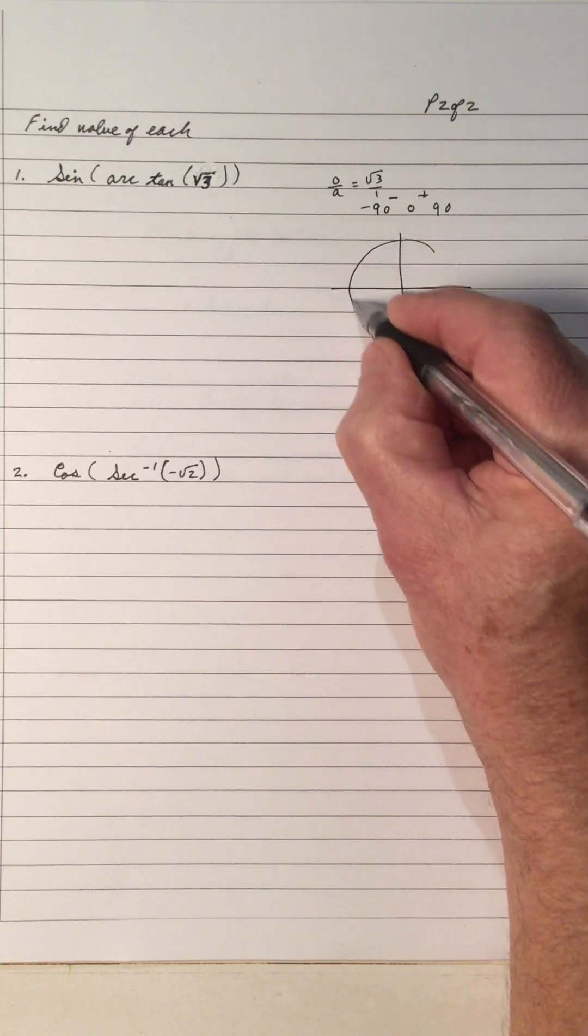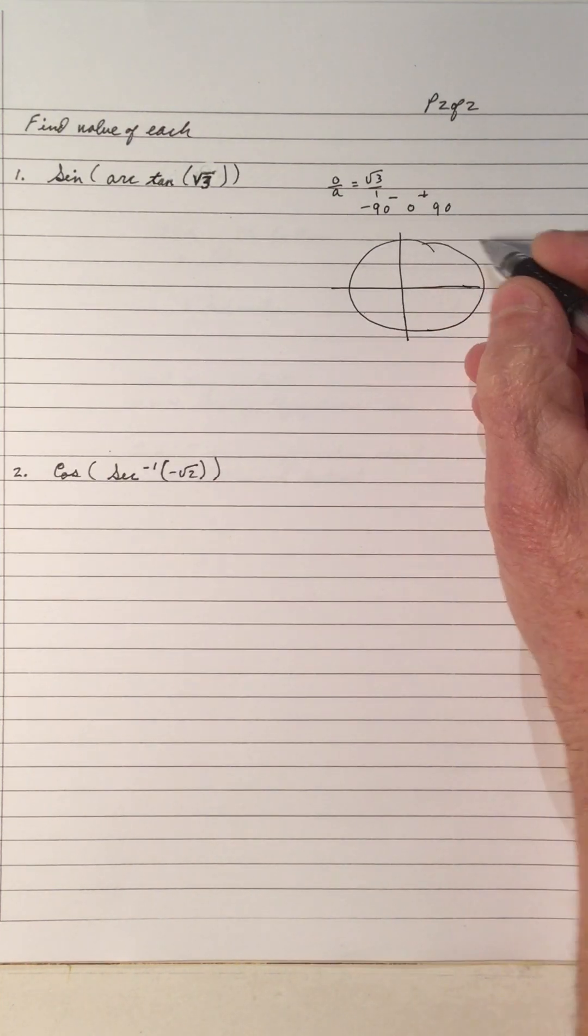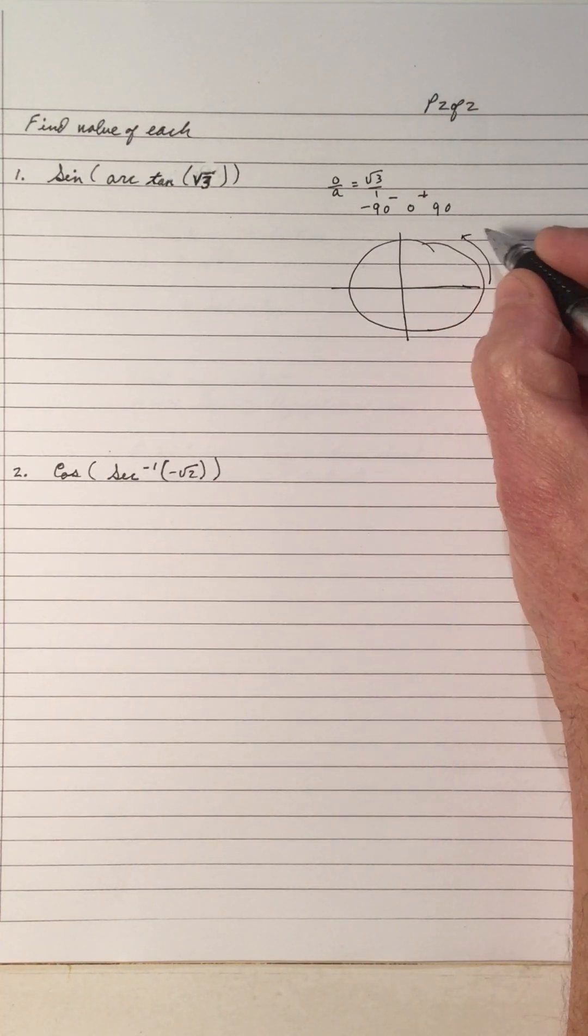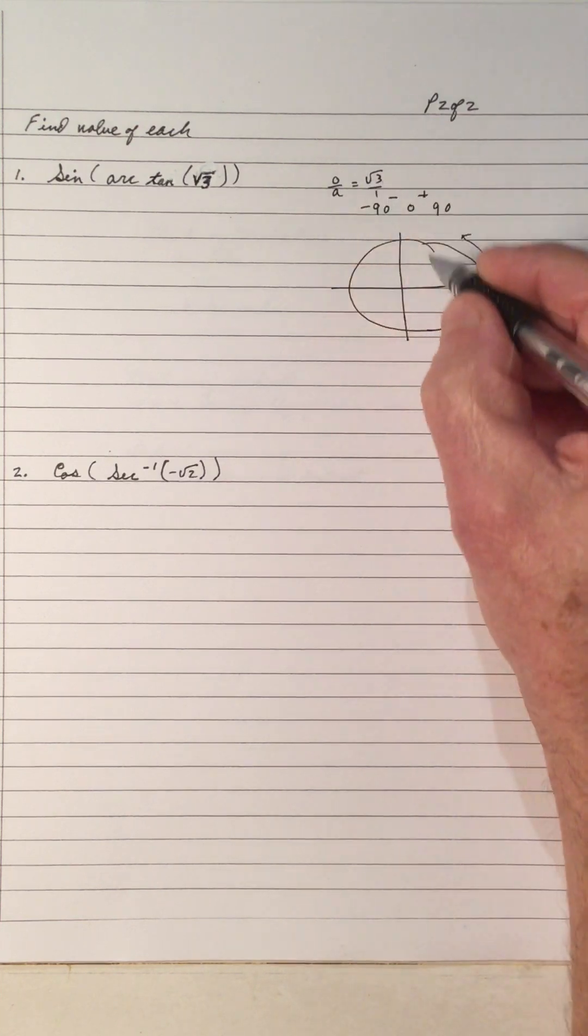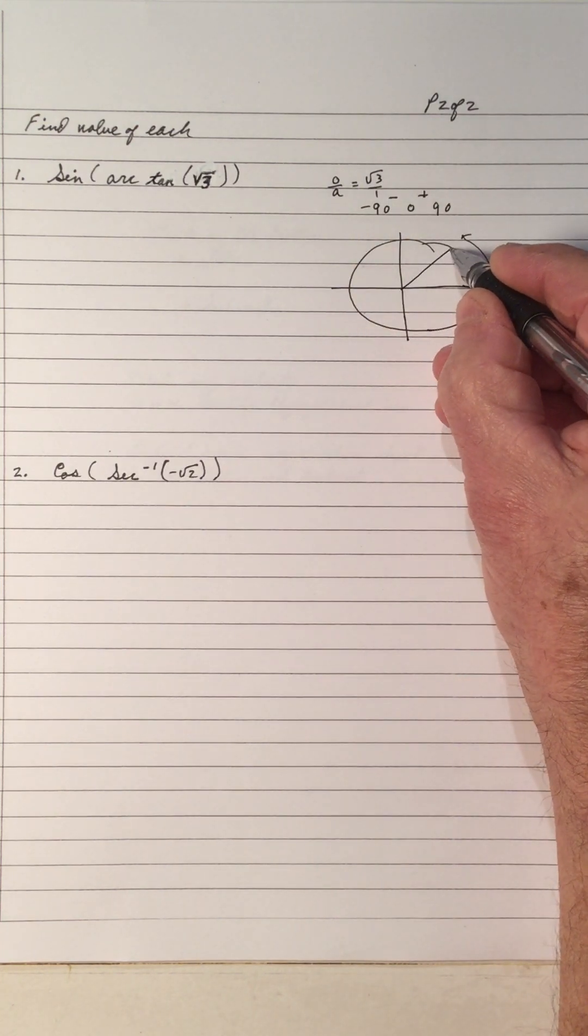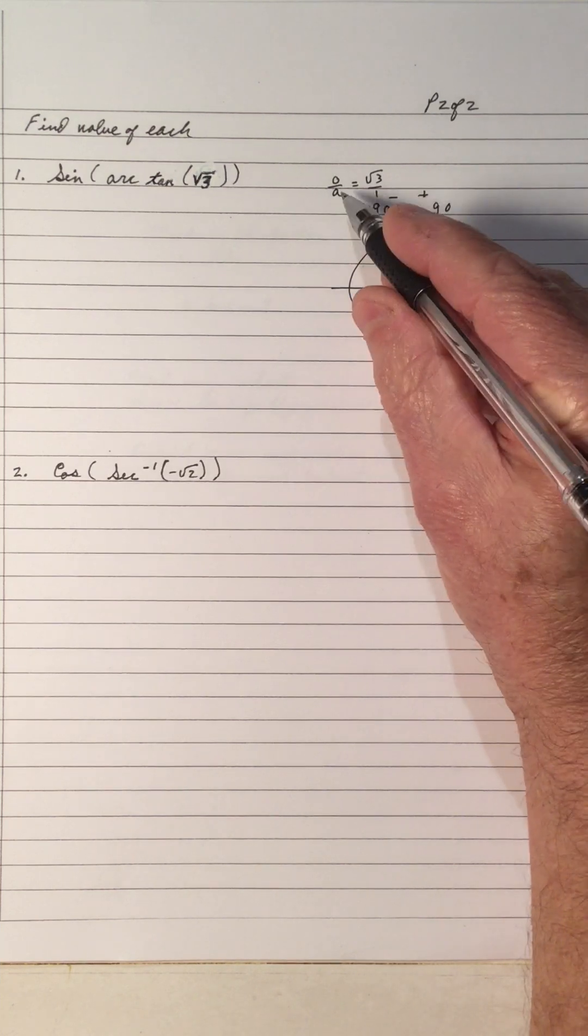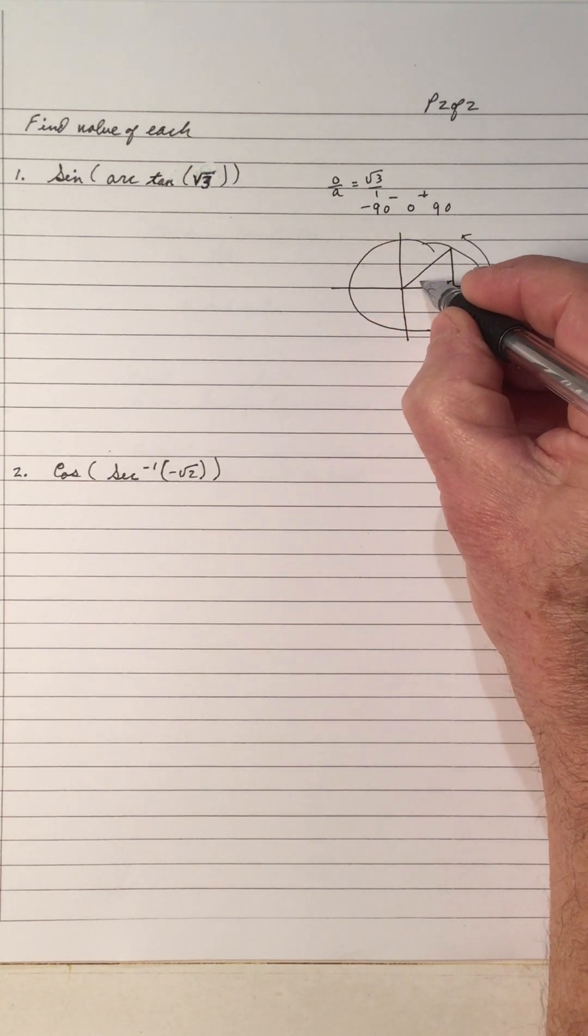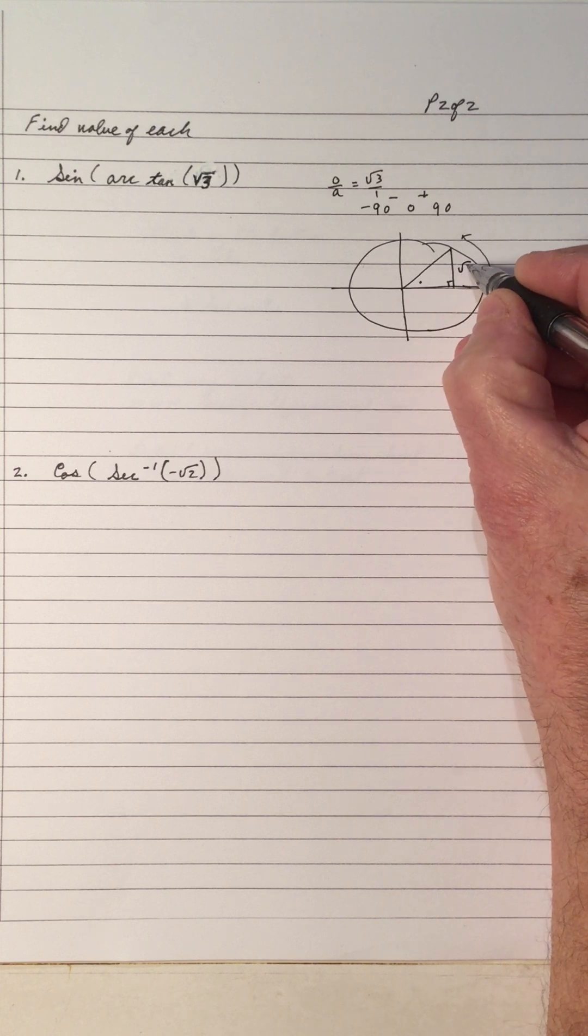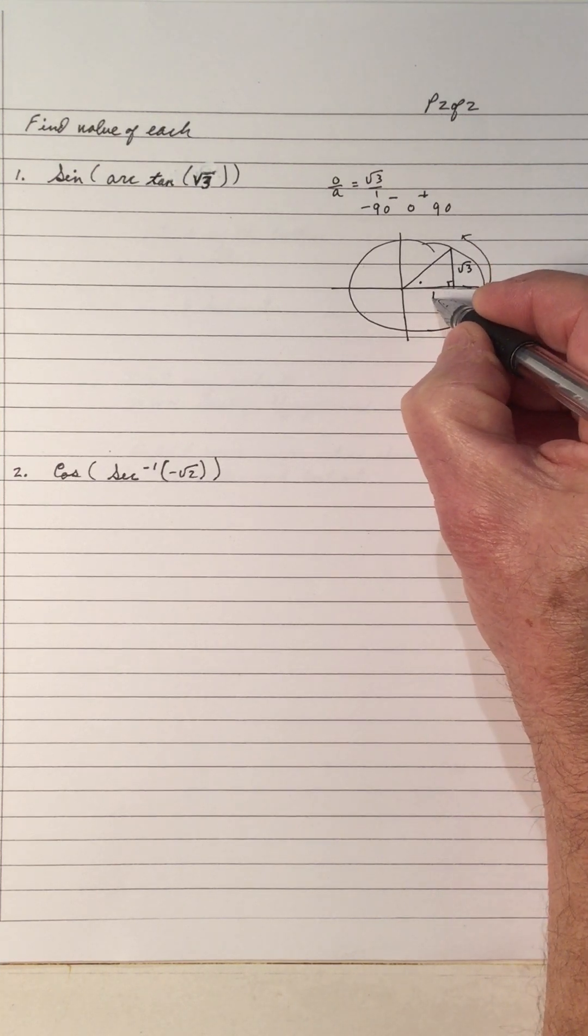So let's draw it in the first quadrant. So here's the rotation. Tan is opposite over adjacent. Draw your term alarm. Draw your perpendicular. And opposite, here's the reference angle. Opposite is the root 3.